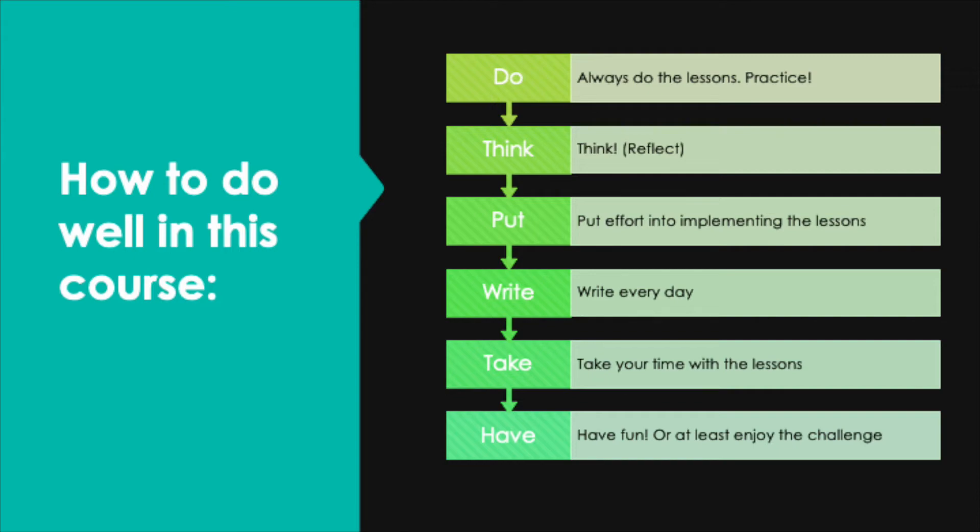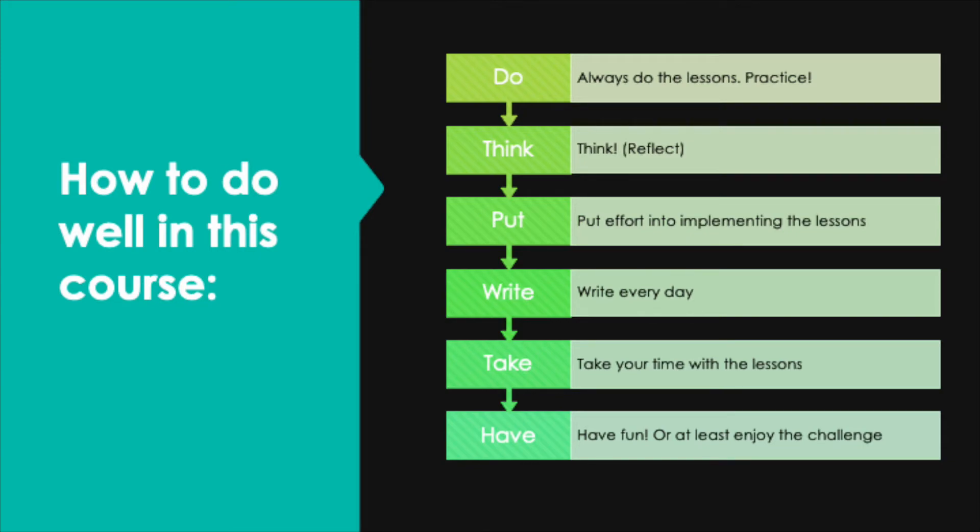Now let's talk about how to do well in this course. The first one is pretty obvious — do all of the lessons. But the important part is to practice. Don't just watch the videos; get out the worksheets and work on those. After you've done the worksheet and the quiz, practice by grabbing your stack of papers and looking for good sentences and mistakes that writers might be making. The second point is to think and reflect — not just do the lessons and move on, but really start thinking: how can I recognize these mistakes, why are they being made, and how can I avoid or correct them?